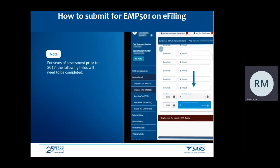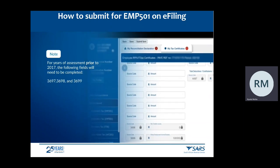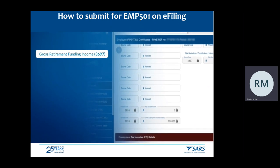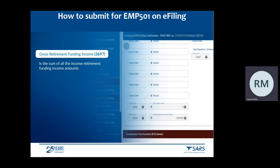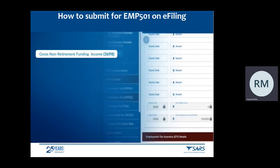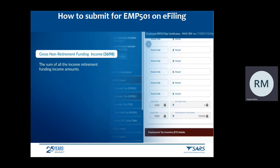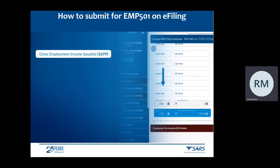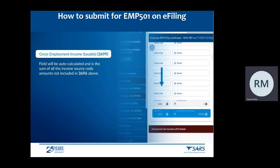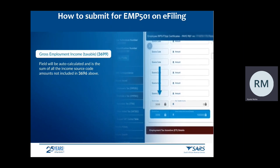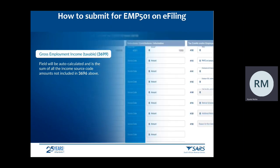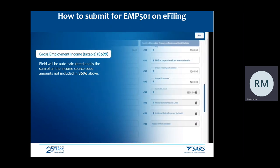Note: for years of assessment prior to 2017, the following fields will need to be completed. Gross Retirement Funding Income 3697 is the sum of all the retirement funding income amounts. Gross Non-Retirement Funding Income 3698 is the sum of all the non-retirement funding income amounts. The Gross Employment Income Taxable 3699 field will be auto-calculated as the sum of all income source code amounts not included in 3696. Insert the amounts in RANDs only, and the source codes applicable to all amounts deducted, including employer information codes — for example, codes starting with 44.